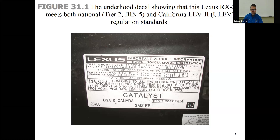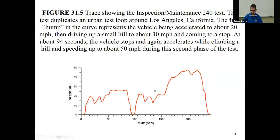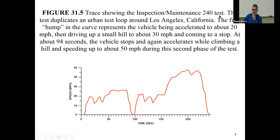This vehicle is applicable to California regulations, making it technically a California vehicle, even though it's US and Canada certified and OBD-II certified. This diagram shows the tests done to test emission systems. This was the original test called the IM240 — inspection maintenance 240 test — which lasted 240 seconds. Here is the speed in miles per hour plotted against time.